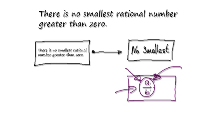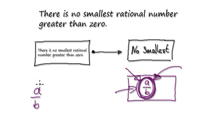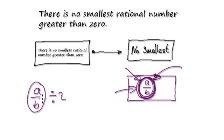But then when we make this assumption, something breaks down. Because we're going to assume that this number exists. If this number exists, then I'm just going to get this number — the very same number — and then divide it by 2.